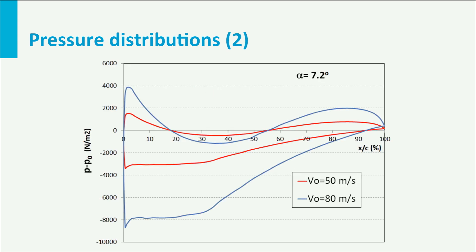This graph shows the change in static pressure along the model surface with respect to the free stream static pressure far ahead of the model for two wind speeds, at an angle of attack of 7.2 degrees. As you can see, the pressure differences become bigger at higher speed.